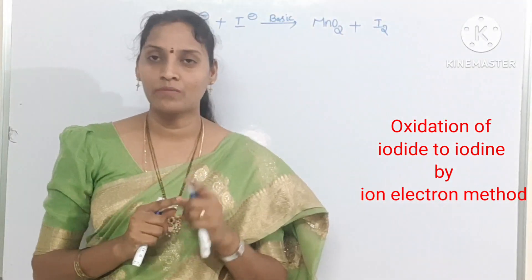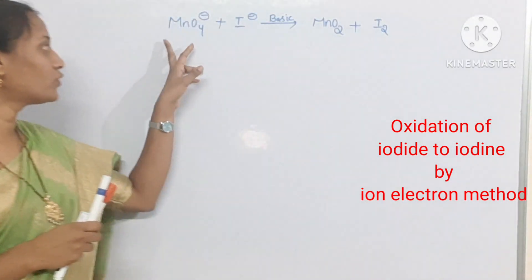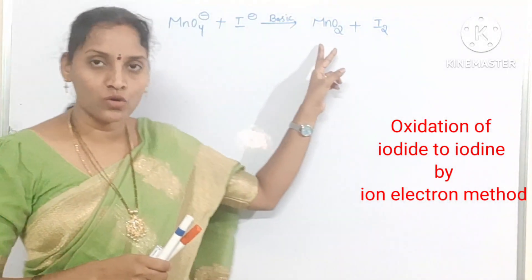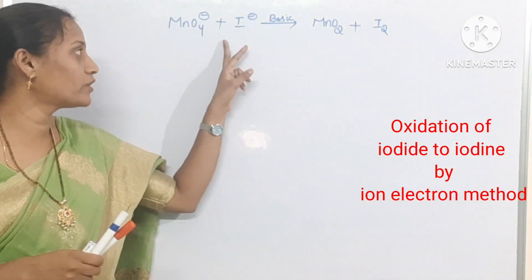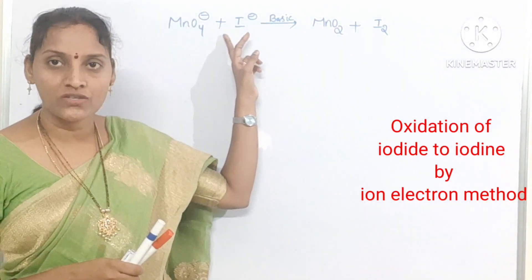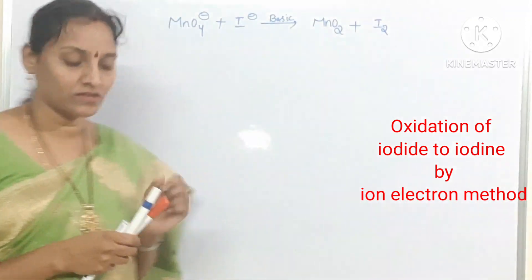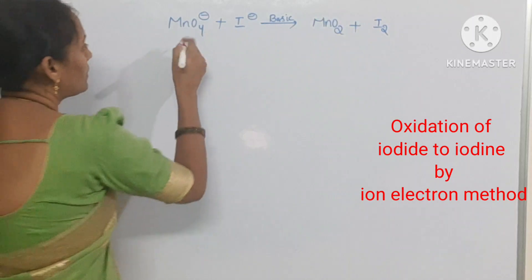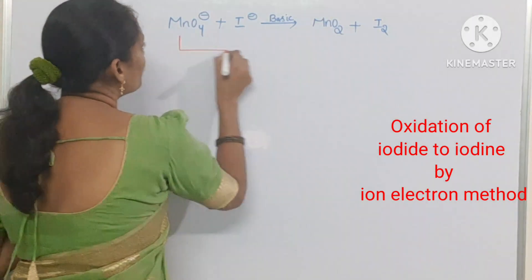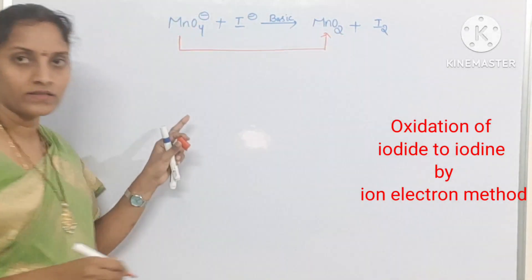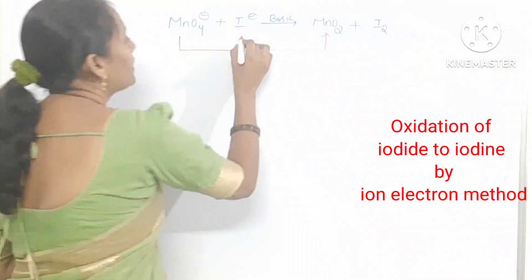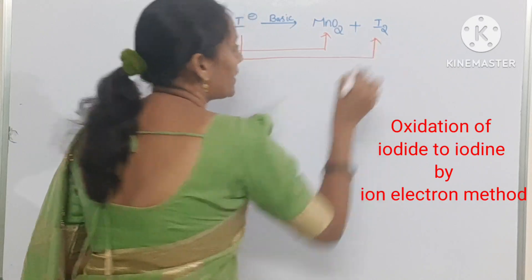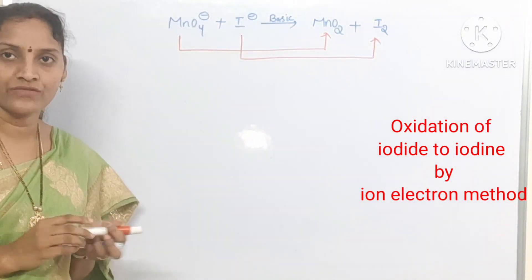That means for manganese, here MnO4⁻ is present. We need to find the oxidation state of Mn in MnO4⁻ and in MnO2, and also the oxidation state of iodine. So, MnO4⁻ to MnO2 is one half reaction, and another one is I⁻ to I2. This is the other half reaction.